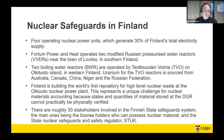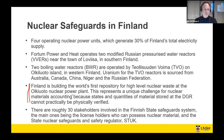Finland is building the world's first repository for high-level nuclear waste at the Olkiluoto nuclear power plant. This is one of the reasons STUK, the Finnish regulator, was so interested in blockchain for nuclear safeguards — it's potentially a way of storing records about batches of nuclear material in a repository that cannot be physically verified. If you cannot physically verify something in a deep geological repository, it becomes increasingly important to trust the records you have of that material for a long time. Blockchain's immutability and distributed nature makes it a very resilient way to store information.